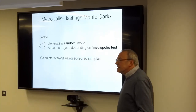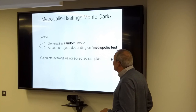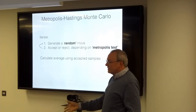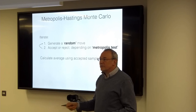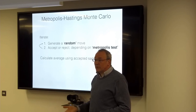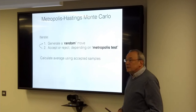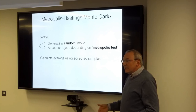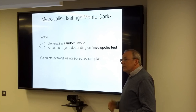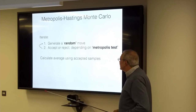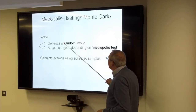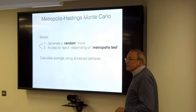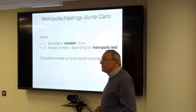One way to generalize Monte Carlo is the Metropolis-Hastings Monte Carlo method. It recognizes that just throwing down uniform random numbers might not be the way to go — we might want to sample from one distribution and then correct. The idea is to incorporate a prior distribution to help localize steps and choose good steps, hopefully accelerating and generalizing the sampling procedure.